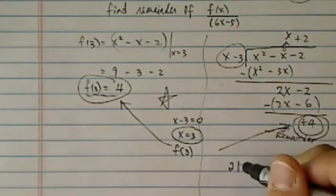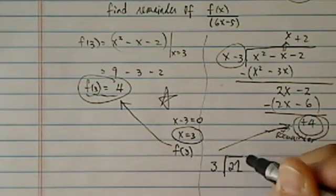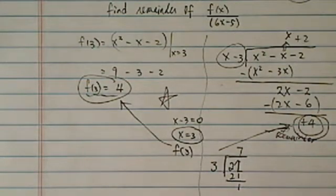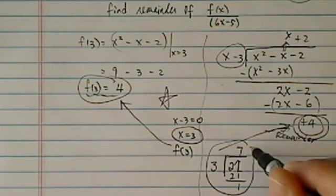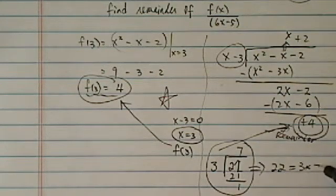Recall this. If we have 22, a simple division here, divided by 3, getting a 7 over there, 21, we have a remainder of 1. Another way to write this one is really saying 22 is equal to 3 times 7 plus 1. Plus 1 is the remainder.